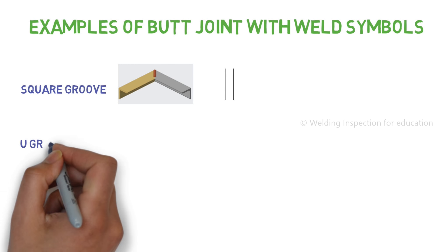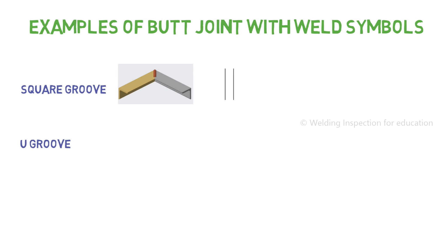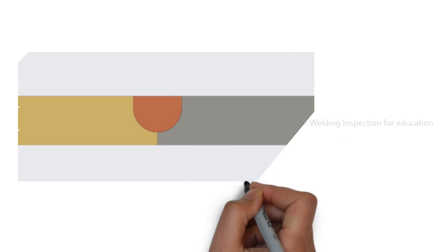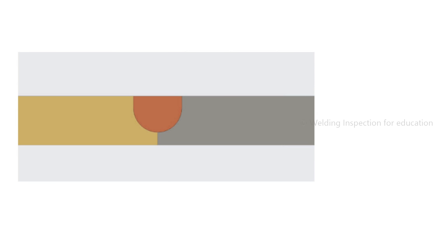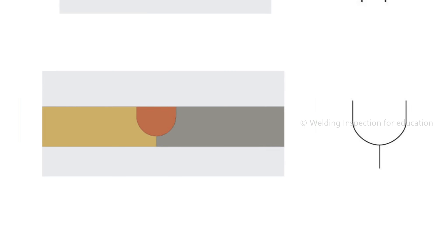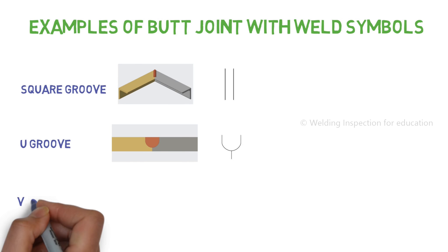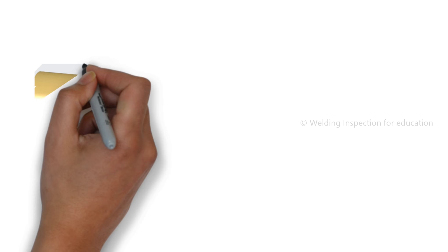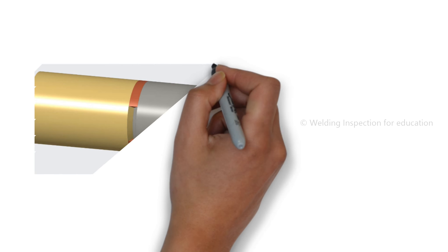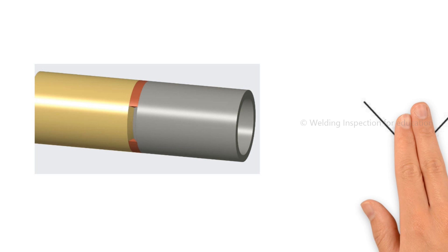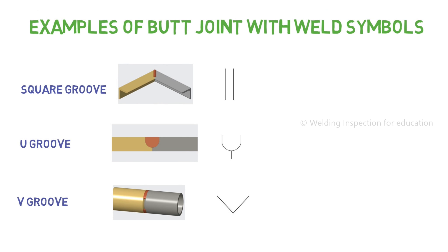Sixth, U groove butt joint: both surfaces are prepared and they are making a capital U shape. Seventh, V groove butt joint: both surfaces are prepared and they are making a V connection, and weld metal is filled in between those two metals.